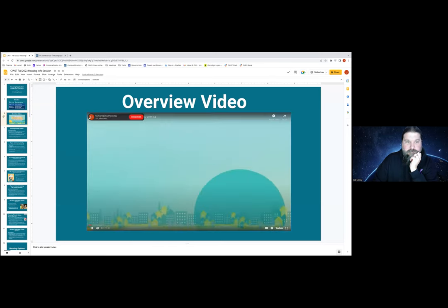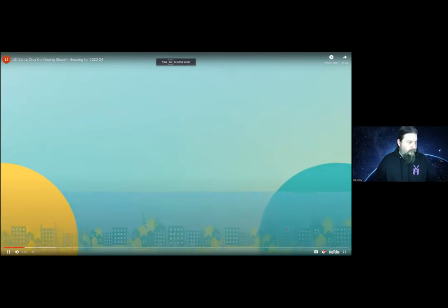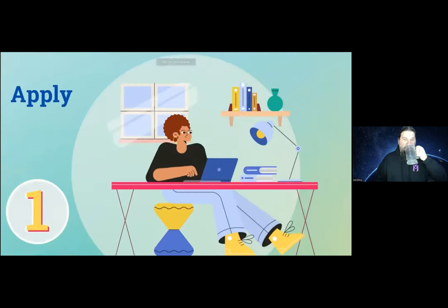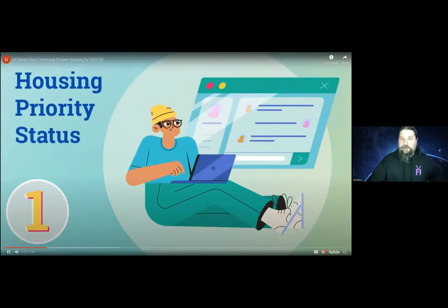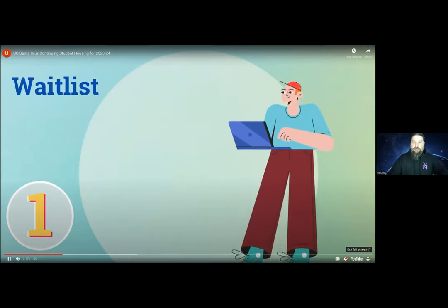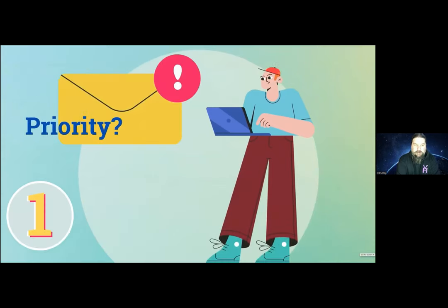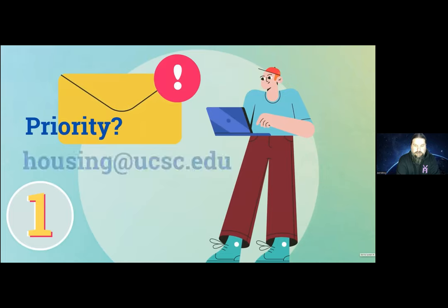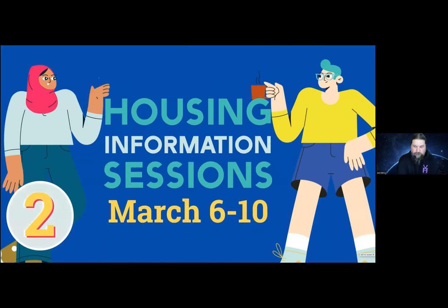Are you a UCSC continuing student interested in university housing next year? Here are five things you should know. All continuing students can apply for university housing. If you have priority status and apply on time, you'll be invited to participate in room selection. If you apply without priority status, your application will be on the general waitlist. Not sure what your status is? Check your UCSC email for a message from housing@ucsc.edu or ask your housing office. The housing info sessions hosted by your college are the best place to learn about fall housing and get your questions answered.